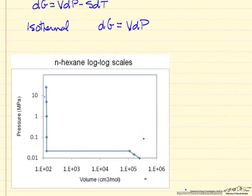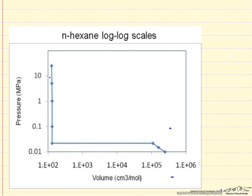And so this is what we're going to look at for normal hexane. We're showing here the pressure, it's on a log scale, and the volume also on a log scale.